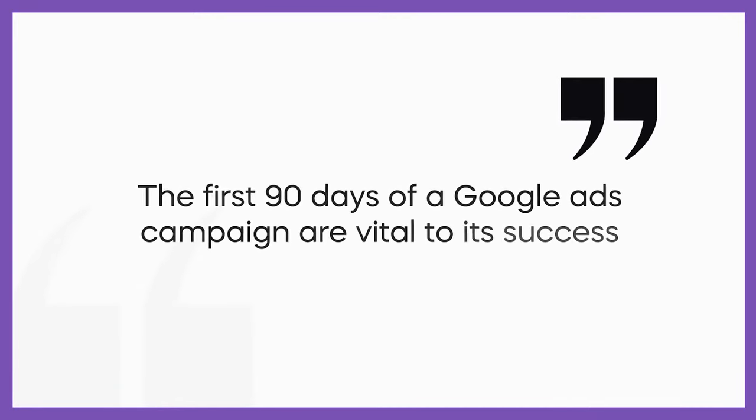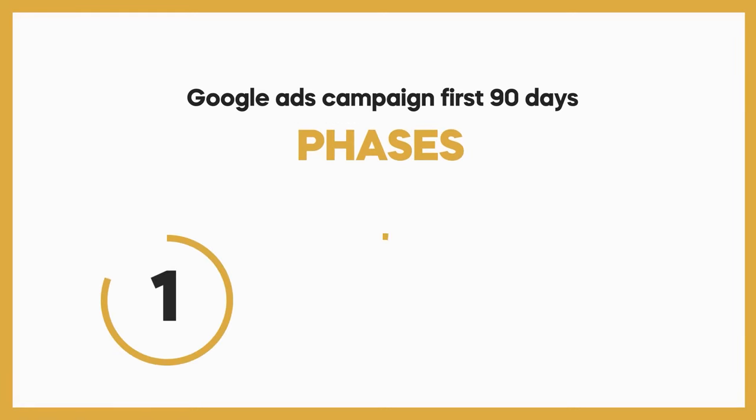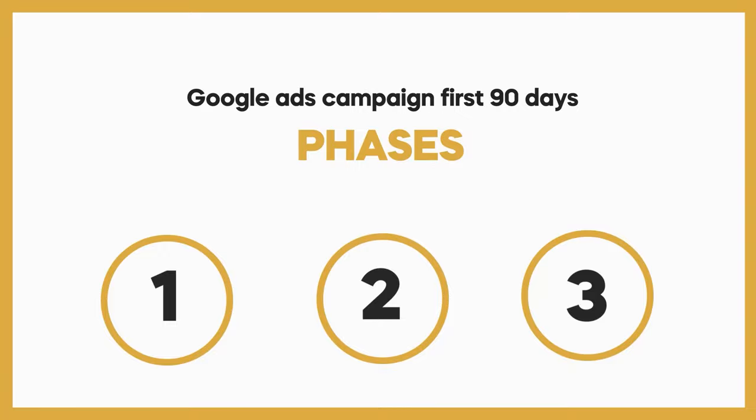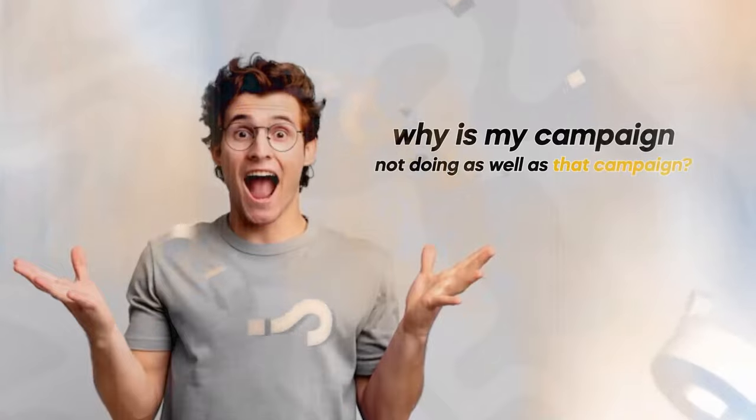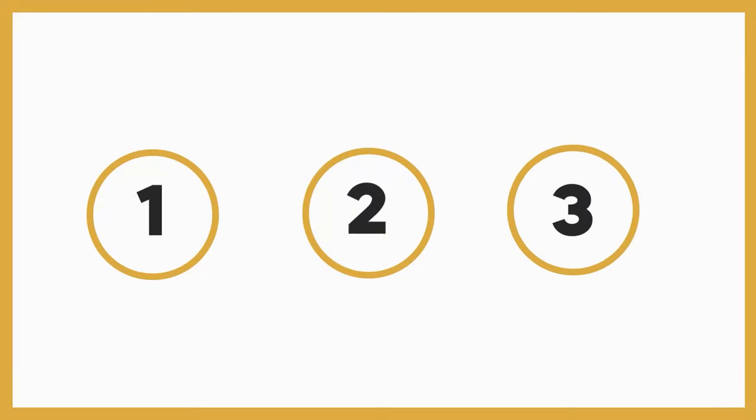The first 90 days of a Google Ads campaign are vital to its success. I wanted to break down the three phases a Google Ads campaign goes through in its first 90 days and put to rest the scary, intimidating part of Google Ads. A lot of people get into Google Ads and sometimes it does well in its first 30 or 60 days, sometimes it doesn't, and they get confused, frustrated, and generally cancel the account after a few weeks. We want to make sure our Google Ads are profitable and we're having long-term success.